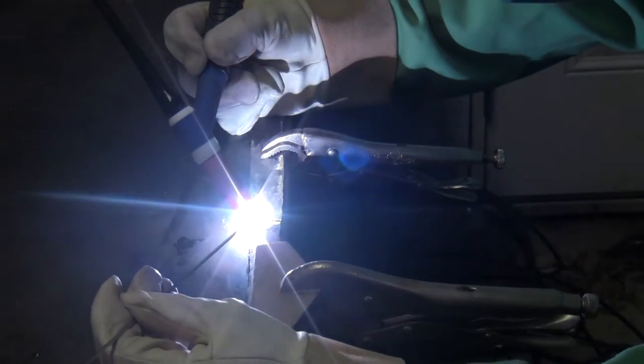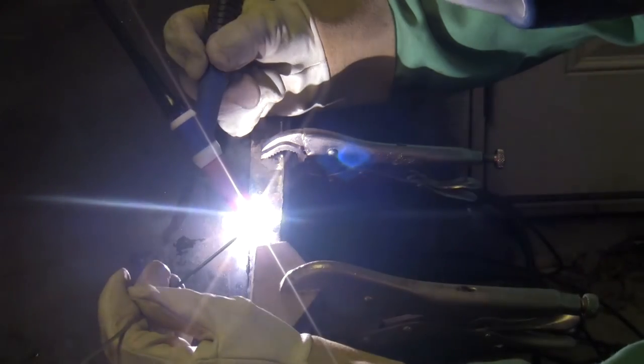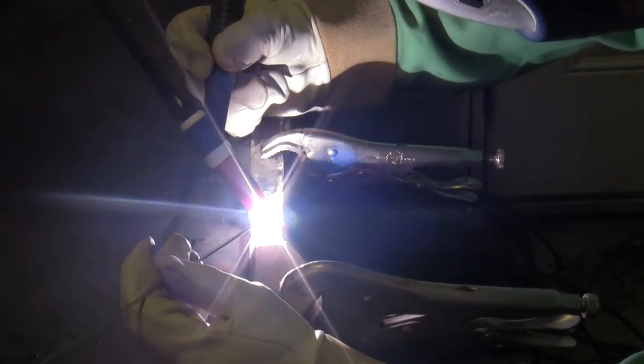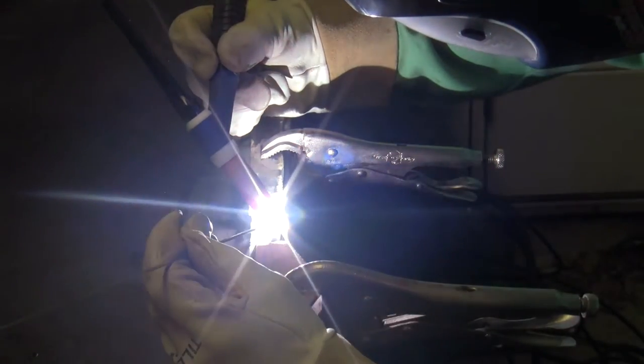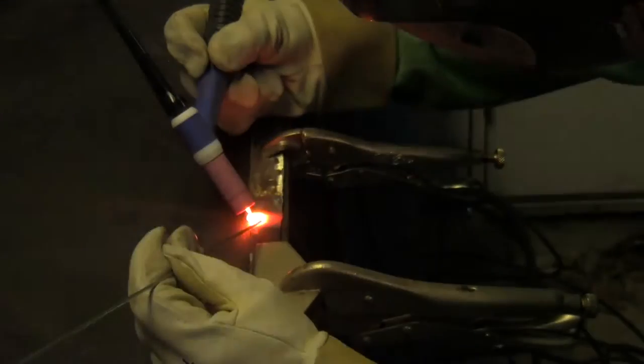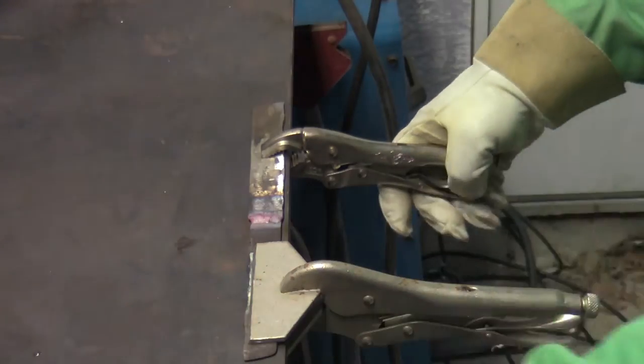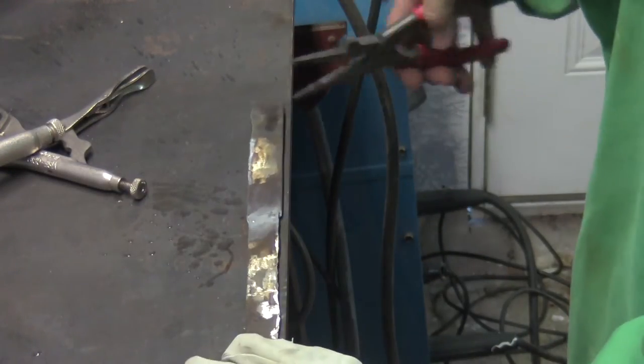Again, I'm using my TIG welder. I find that TIG is the easiest to control and to make sure that you get full penetration welds. I'll flip it over and weld it on the other side.